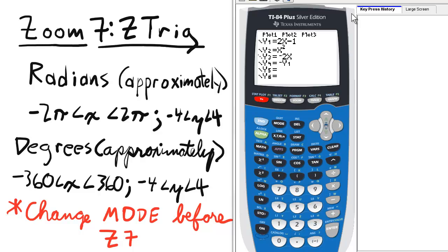For the Zoom 7 Z Trig option, we're going to deselect all of our functions, and then we will set Y5 equal to sine of X and press Enter.